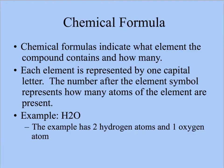Chemical formulas indicate what element is present in a compound and how many. Each element is represented by one capital letter. Sometimes there is a lowercase letter as well, but there is always one capital letter. The number after the letter will indicate how many are present.